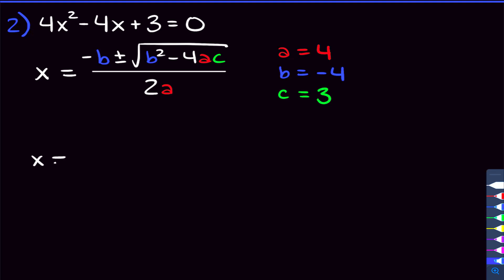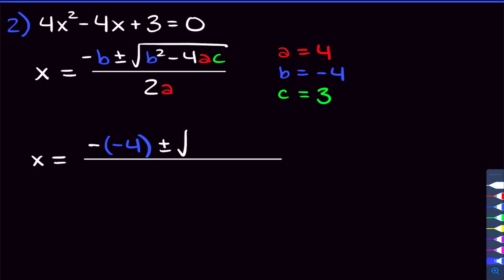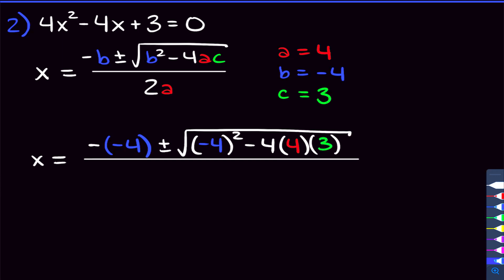Now we can plug into the quadratic formula. We get x equals negative b — so we put the negative there — but b is negative 4. Pay very close attention here: there are going to be two negatives. A lot of people mess that up and only put one negative down. One negative comes from the formula, and the other comes from the fact that b itself is negative. So make sure you put both there. Continuing to plug in: plus or minus the square root of b squared, which is negative 4 squared, minus 4 times a, which is 4, times c, which is 3. And that's all over 2 times a, which is 4.